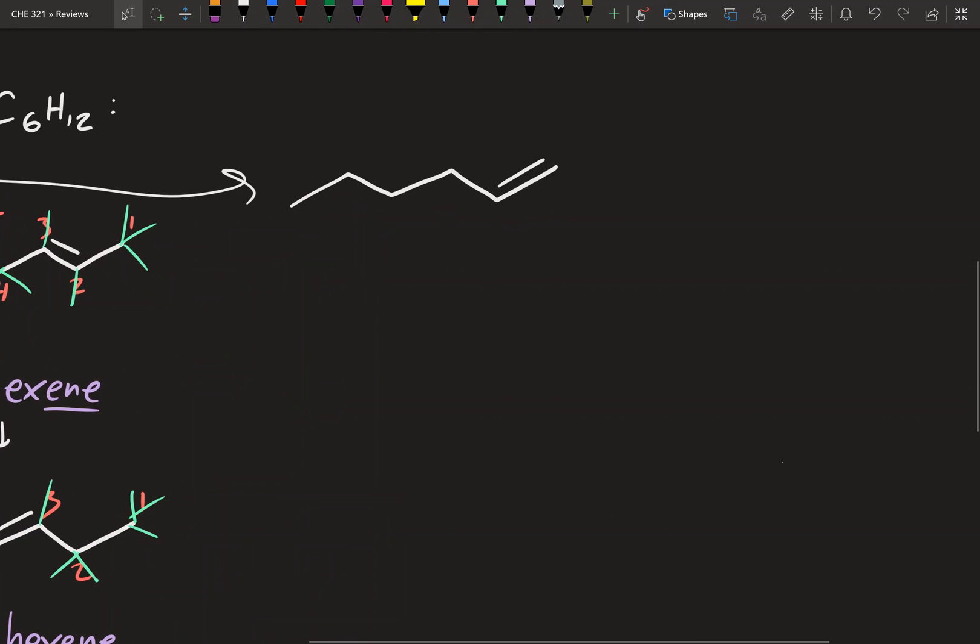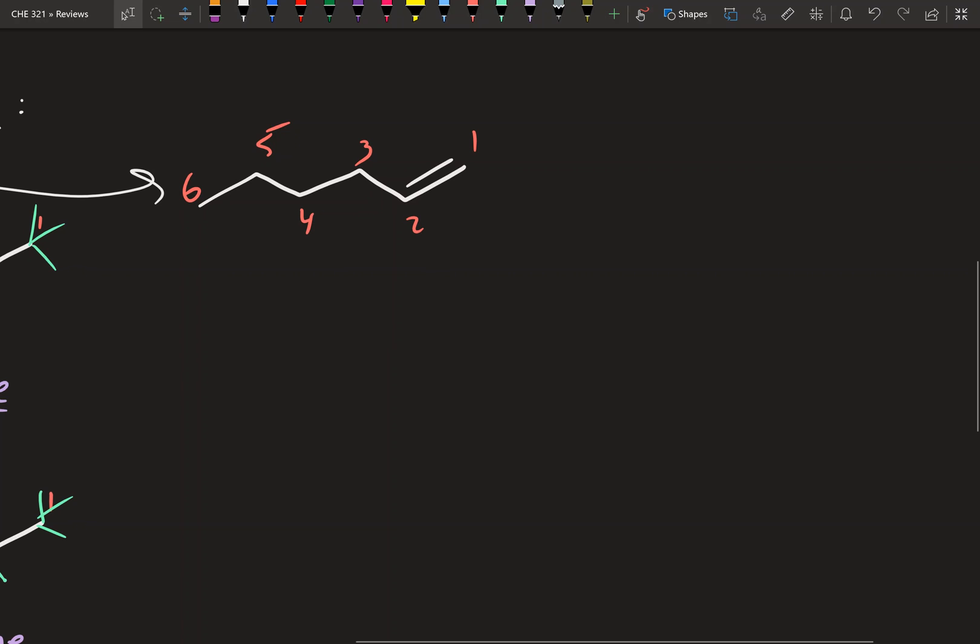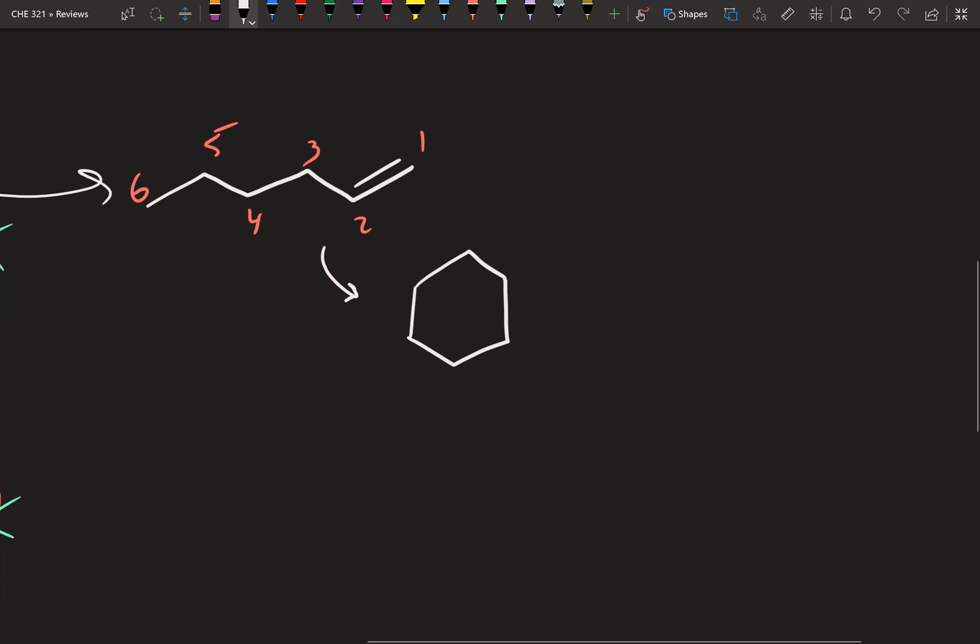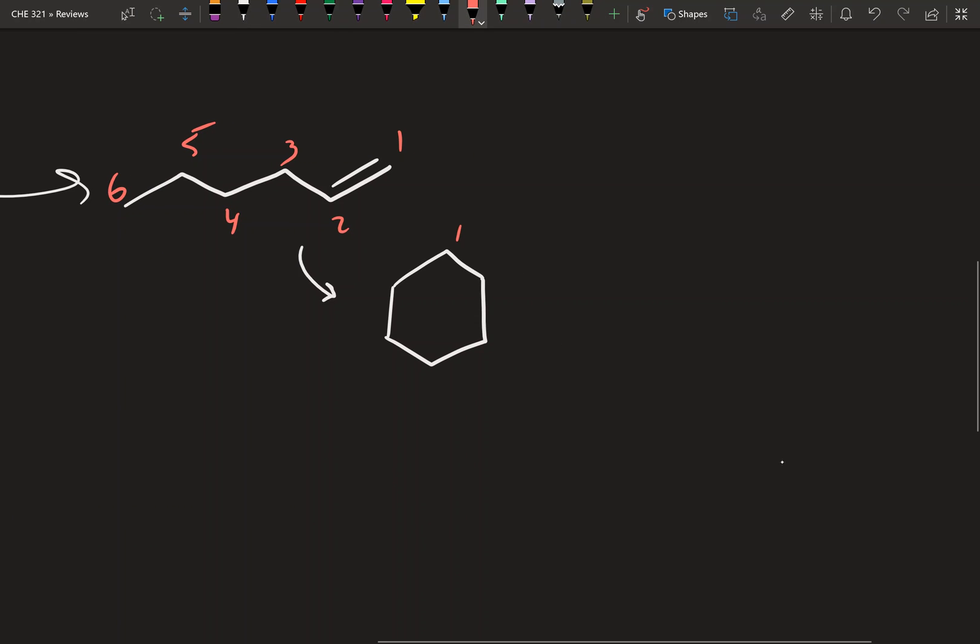All right. So I'm going to redraw this molecule over here just for reference. Renumber. 1, 2, 3, 4, 5, 6. And what we can do now is we can draw a closed ring structure. And why we can do that, you'll see in a second. So 6 carbons, I'm going to draw a 6 carbon ring. All right. Now, we have our 6 carbons. Let's just count.